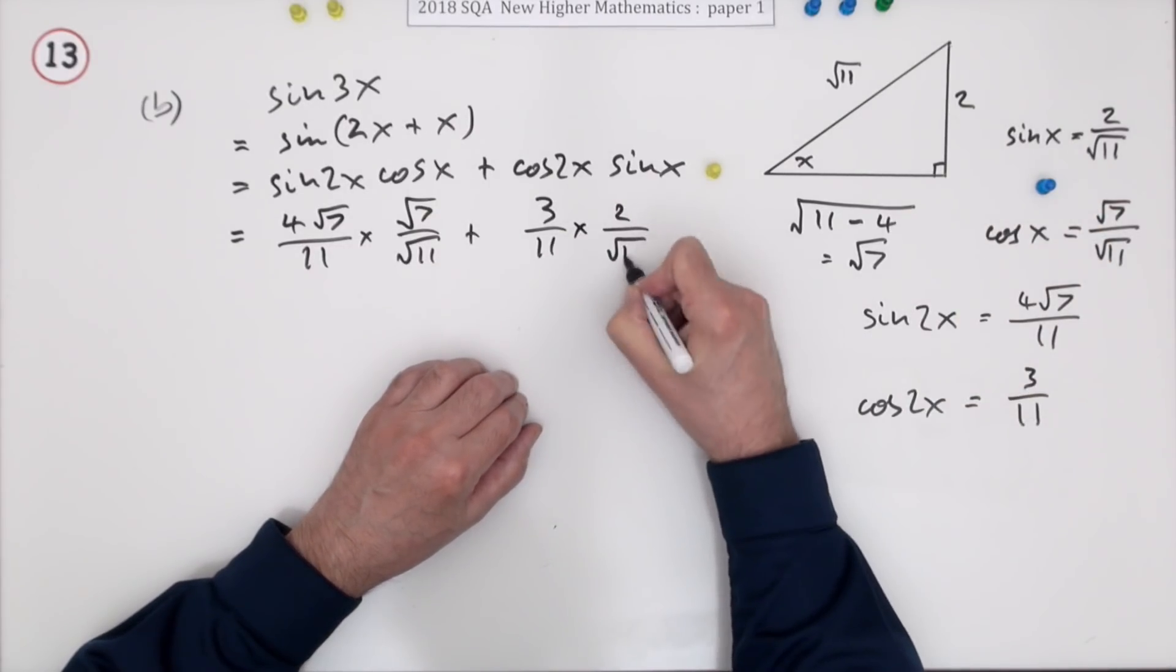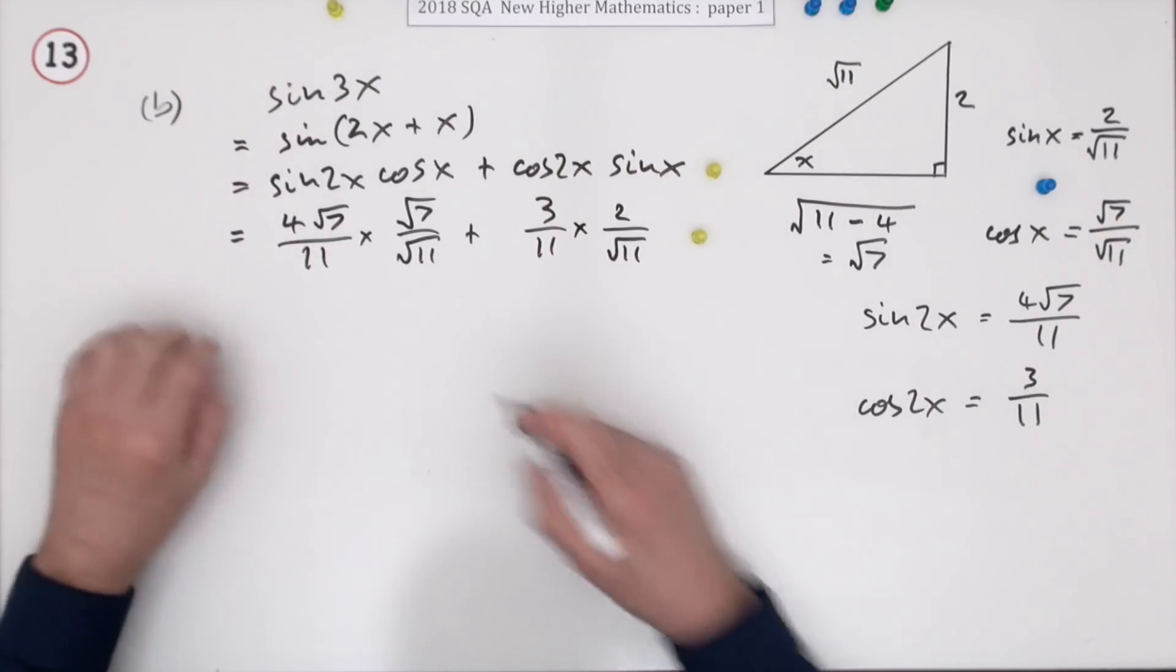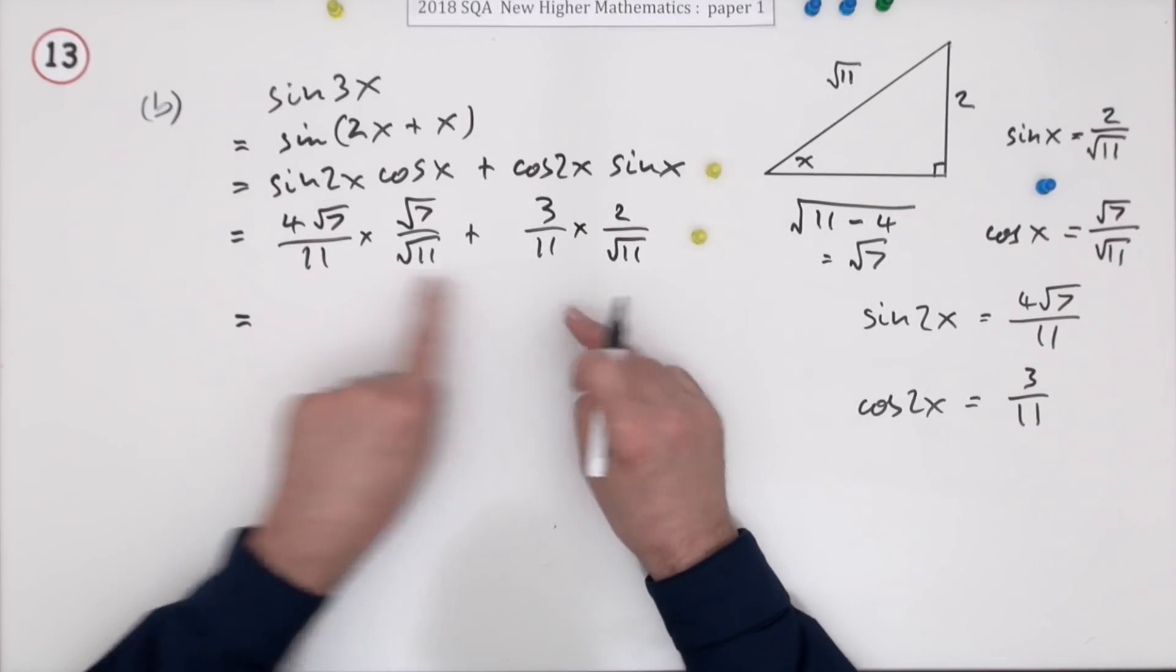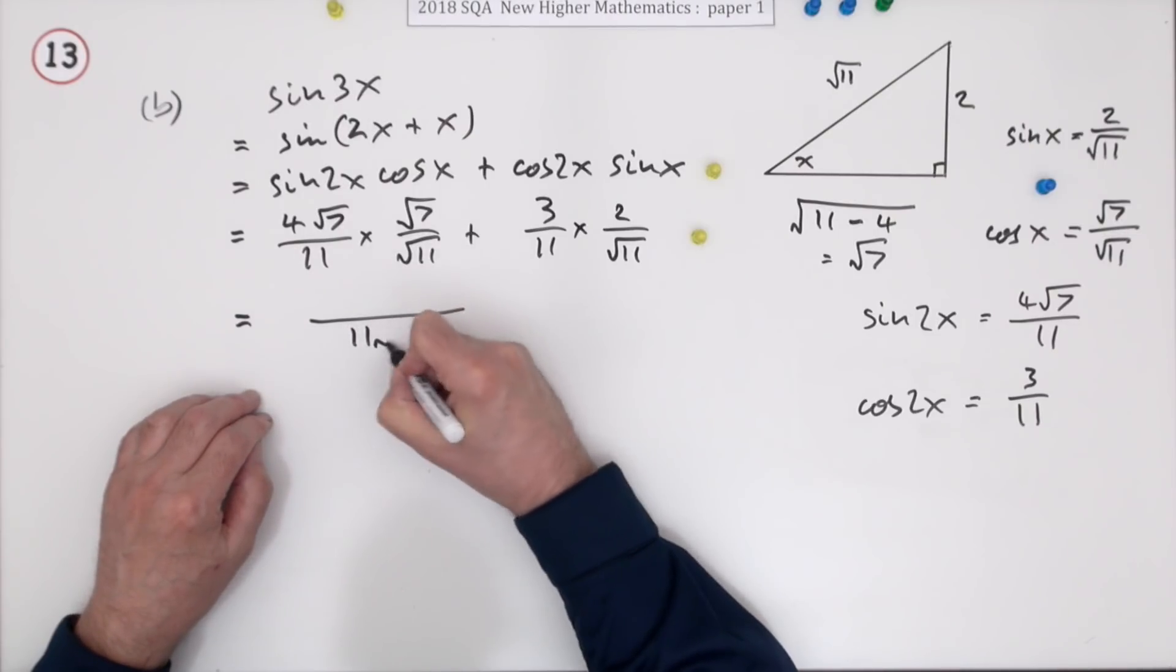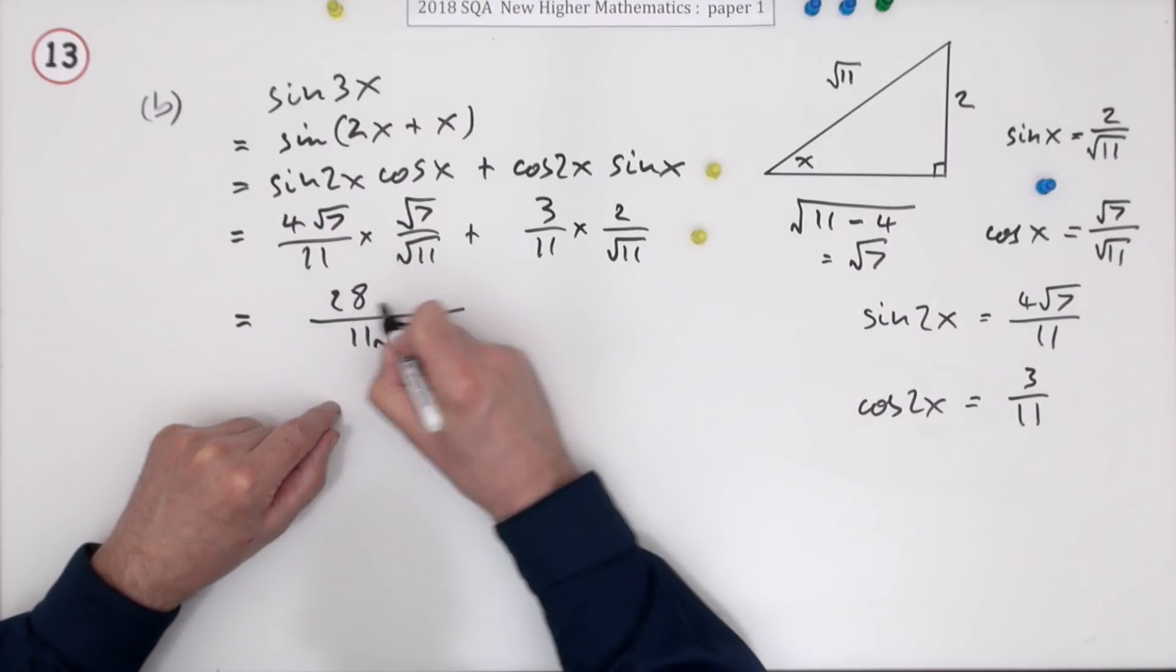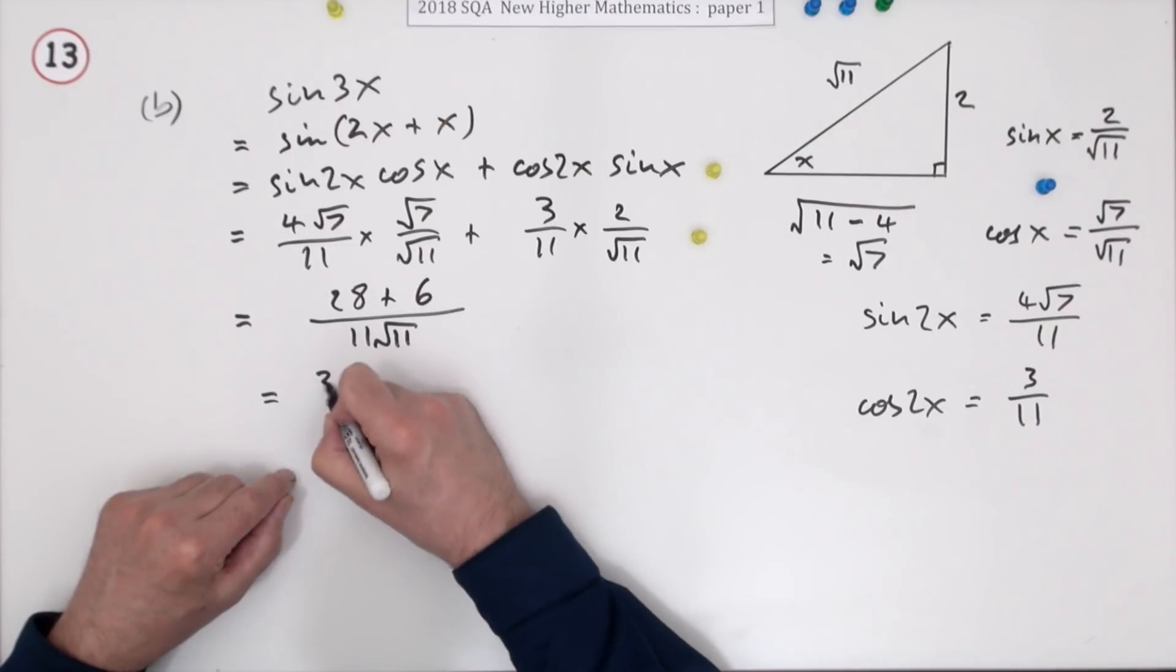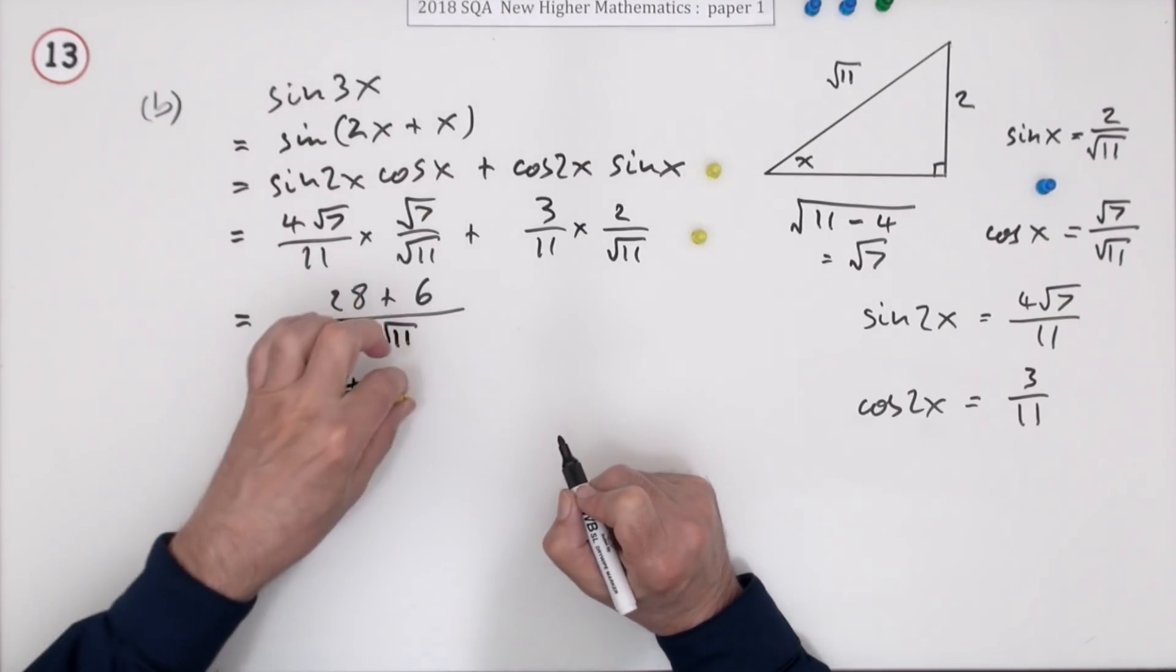Now let's just add that lot up. Common denominator: they're both over 11 root 11. So 4 times root 7 times root 7 is 7. 4 7s are 28. 3 2s are 6. So you've got 34 over 11 root 11, and that's the final mark.